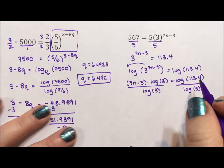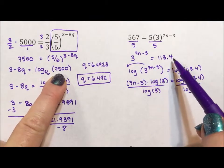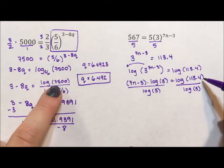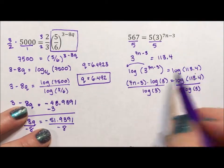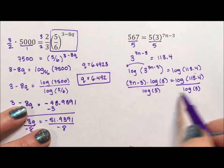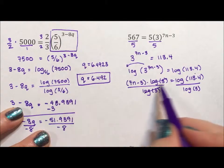If we had done the approach over here where we had written it as log base 3 of 113.4 we would have ended up with log of argument over log of base. You can see right here why that works. We take the log of both sides and then we can divide leaving us very much in line with where we were here.